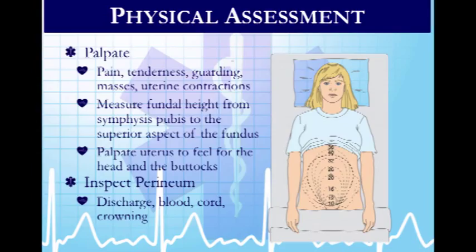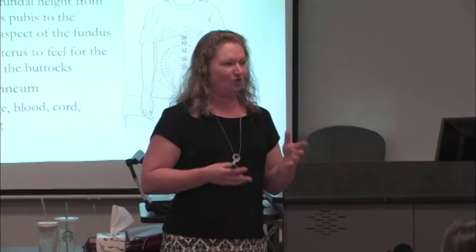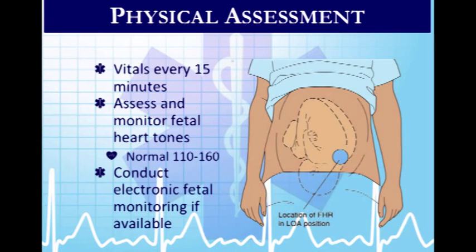In emergent situations where the female has complaints, we are not asked to do any internal vaginal exam, but we do want to do perineal visualization — looking for a stray foot, a cord, bloody show, or hemorrhage. We're going to inspect that perineum. General rule of thumb: vitals every 15 minutes unless the medical condition indicates more often.